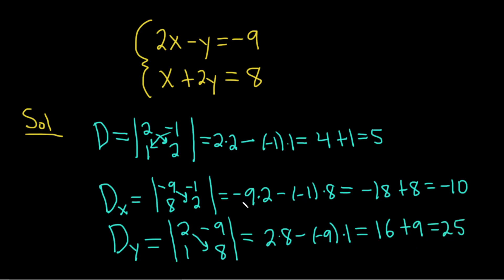Okay, the last step is to write the answers. So we have Big D, we have Big D sub x, we have Big D sub y. So it turns out that it works out really nicely. x is equal to Big D sub x over Big D. And y is equal to Big D sub y over Big D.